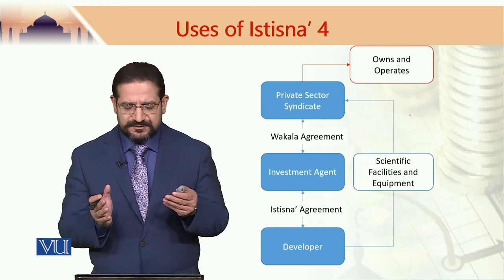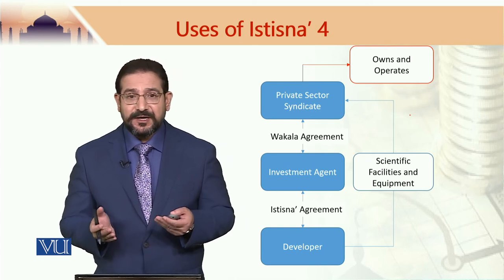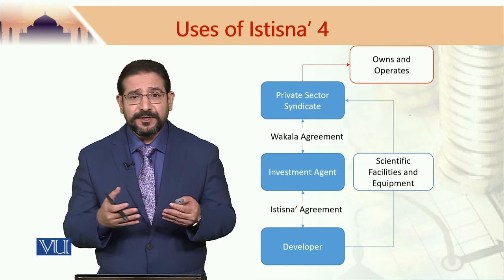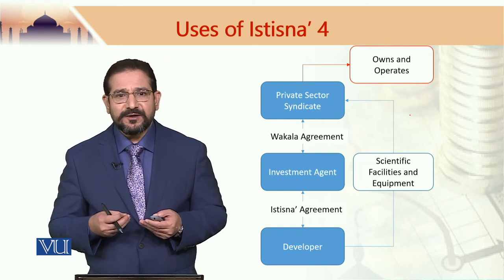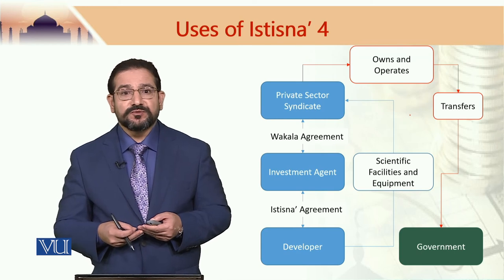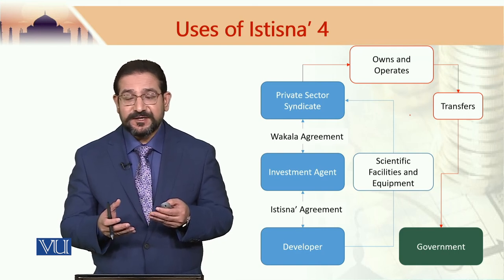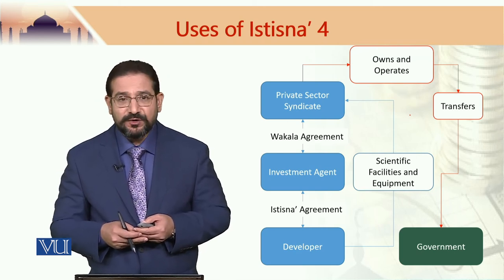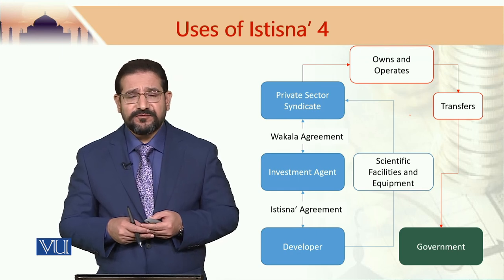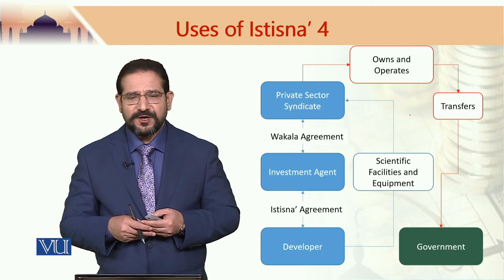The private sector syndicate would own this facility and operate it for a certain time period — not just one or two years, but it could be 10 years, 15 years, or more. So this is a kind of build, own, and operate, and then later on transfer to the government if the government would like to have control of this facility. If this facility is of strategic public interest, the government would eventually like to take control. So this could be an example of an Istisna application in the context of a large infrastructure project, which could be important for economic growth in a country like Pakistan.